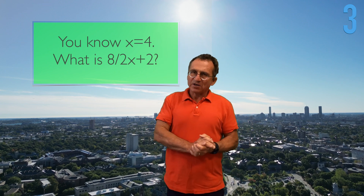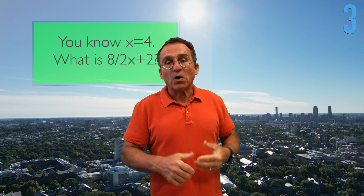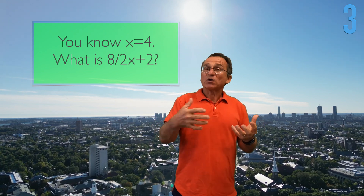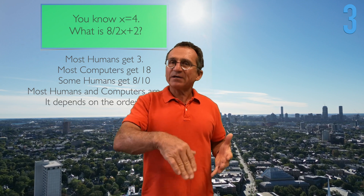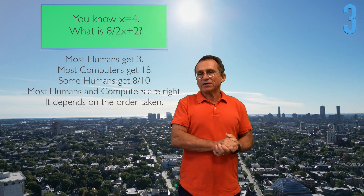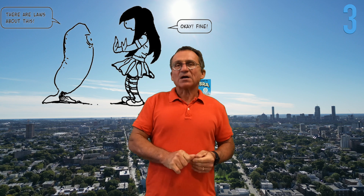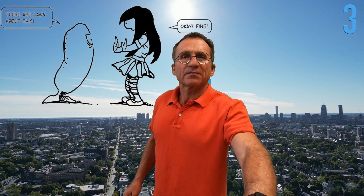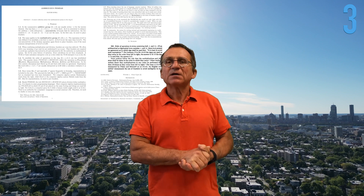Here is an example where most humans get a different answer than a computer — it's an ambiguous expression. Most humans say 8 over 2 times (1+2), treating the multiplication before division, and get 1. Computers take it from left to right and give 18 as the result. This has produced a lot of discussion. I wrote once about this ambiguous PEMDAS on my blog.